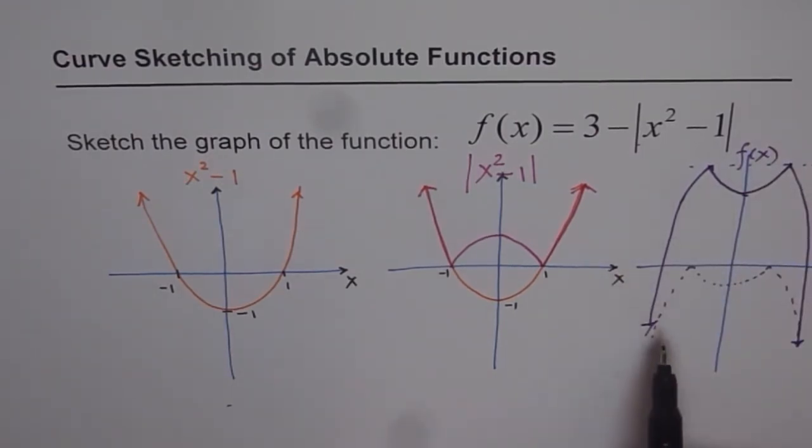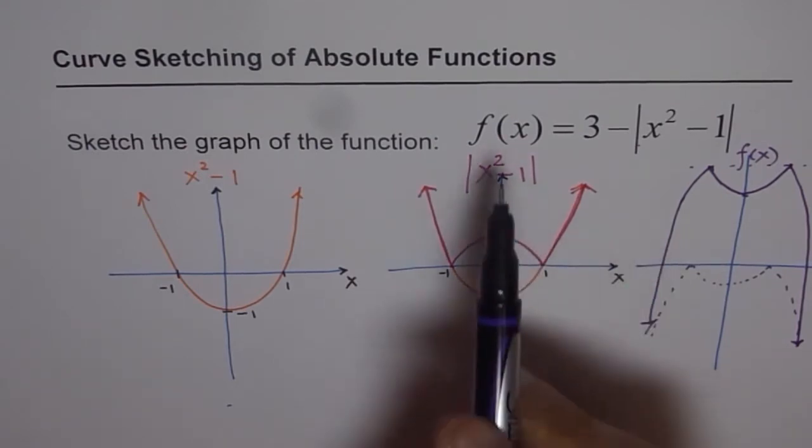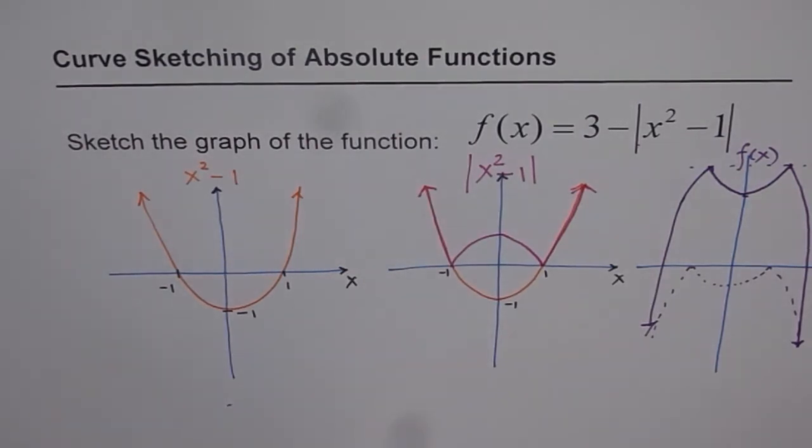Now of course, to find the x-intercept, what you can do is, you can substitute the value of f(x) as 0 and then figure it out. So that's one way we can do it. Anyway, so let's recap the steps.